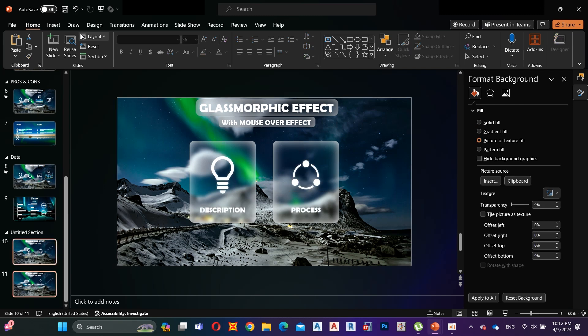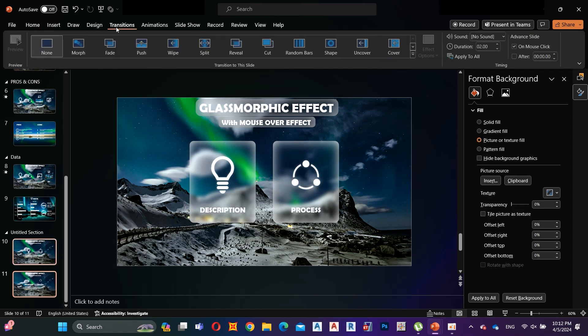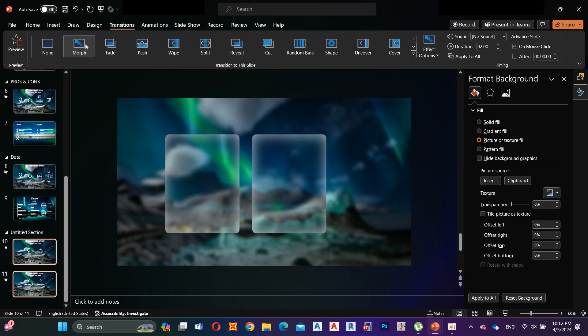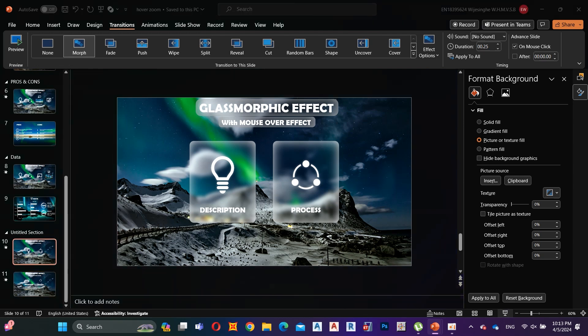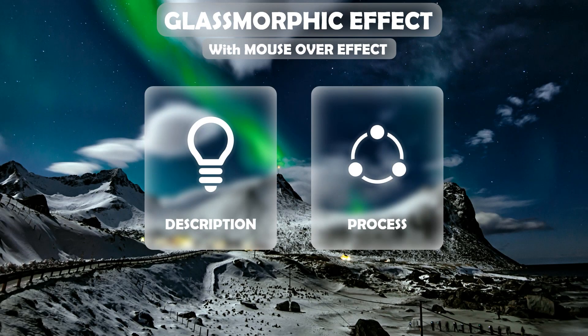Select both slides, go to Transition, and add Morph transition. Decrease the duration to 0.25 seconds. Let's see how it works — it works very well with the right and left arrow keys.